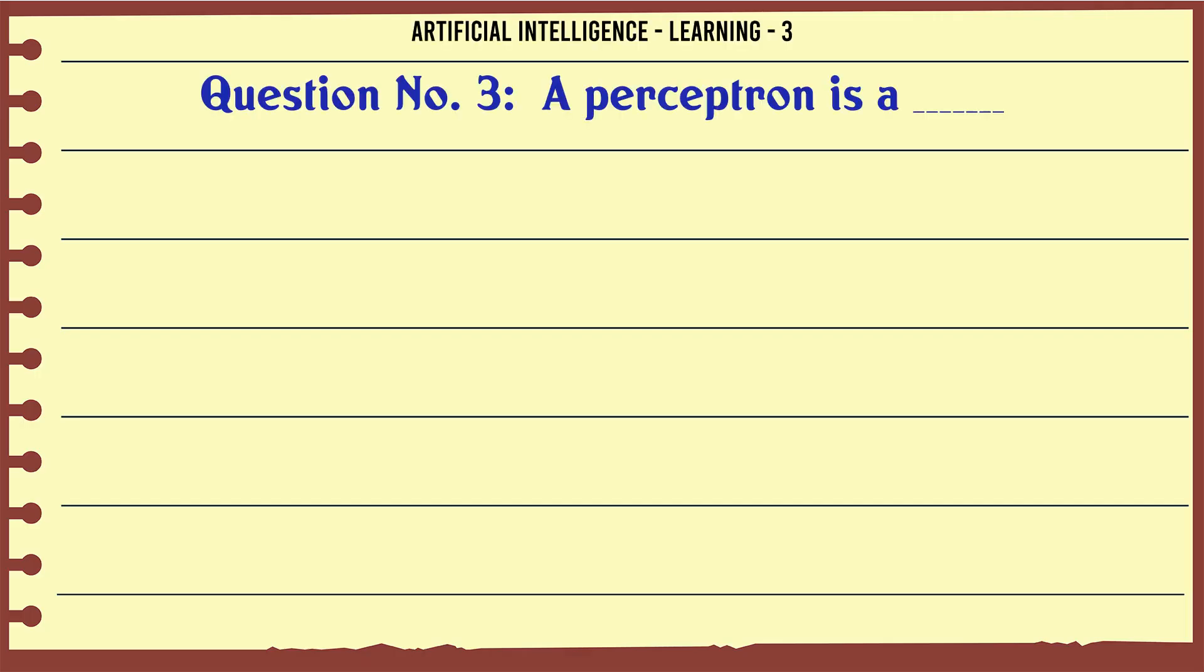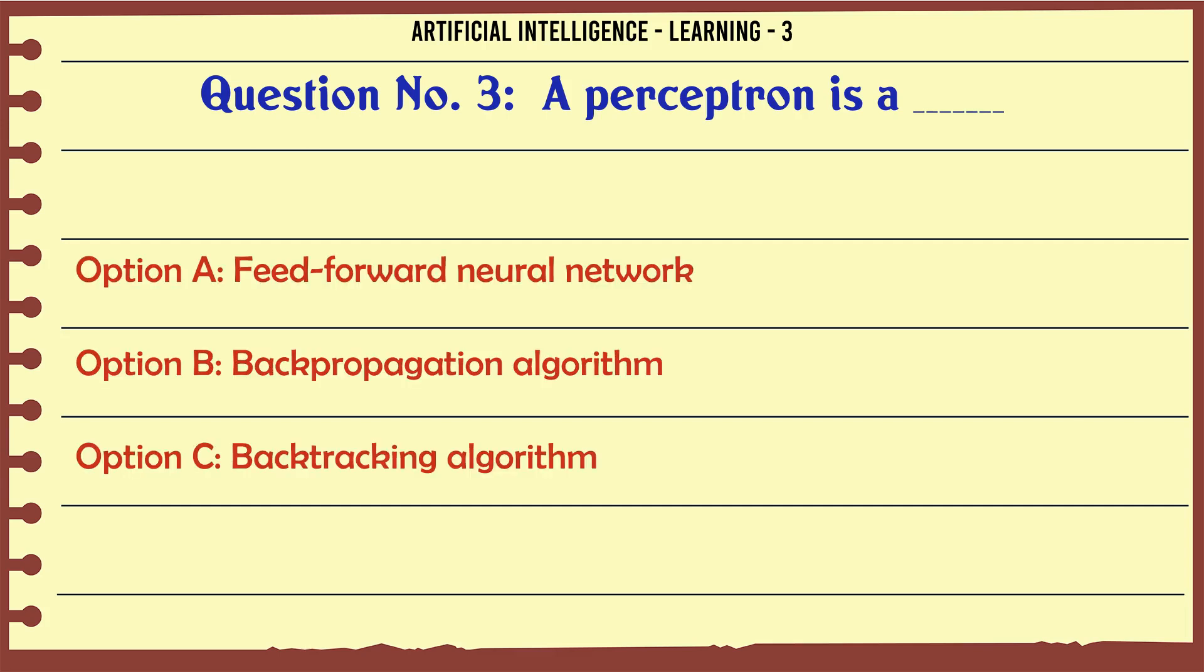A perceptron is a: Option A: feed forward neural network. Option B: back propagation algorithm. Option C: back tracking algorithm. Option D: feed forward backward algorithm. The correct answer is feed forward neural network.